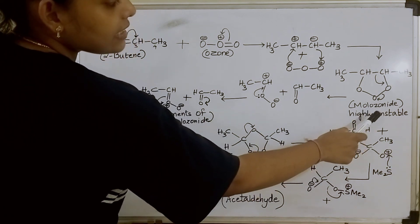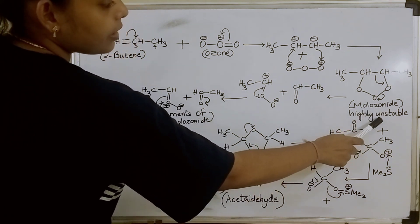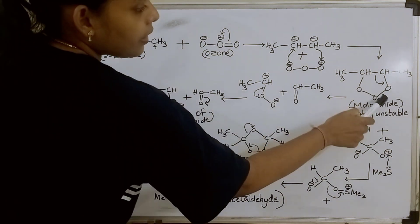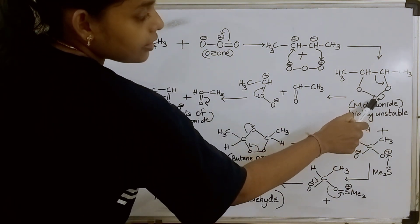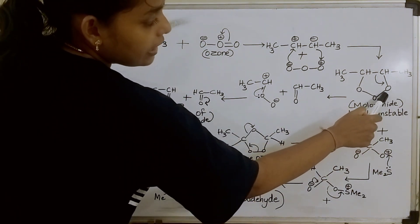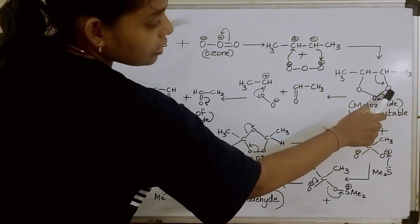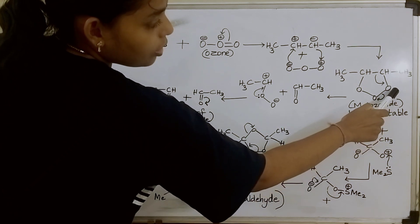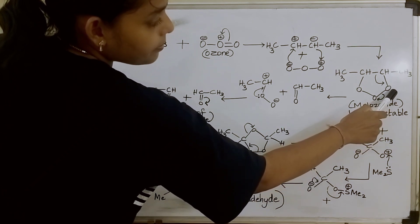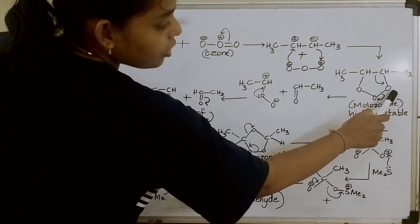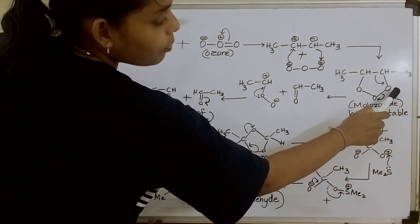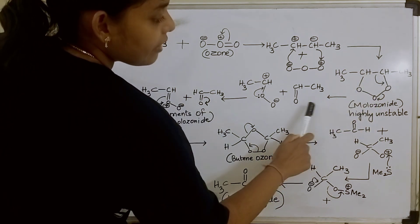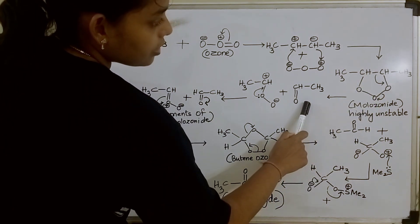As molozonide is highly unstable, it will undergo fragmentation. Here this oxygen will take a bond from oxygen, getting a negative charge and leaving this oxygen positively charged. As this oxygen is having a positive charge, this bond is shifted here, giving us this structure.